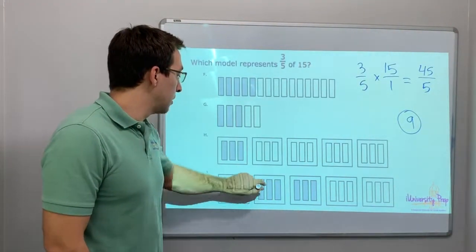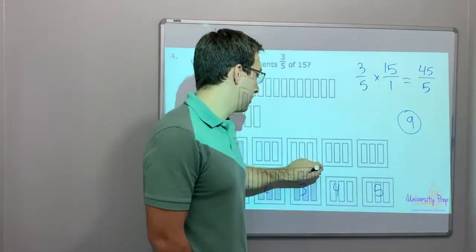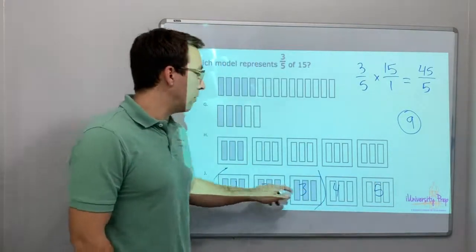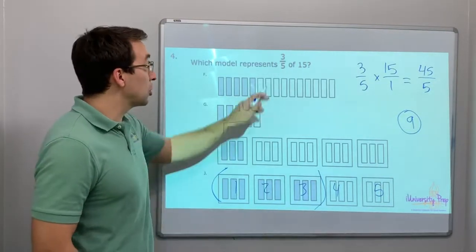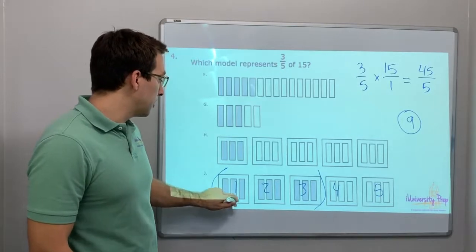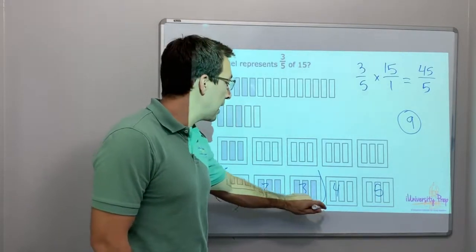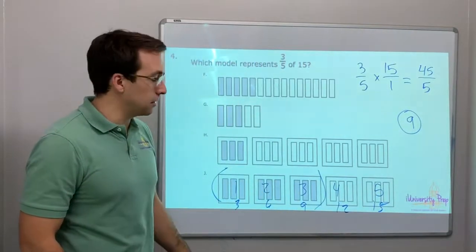One, two, three, four, five. Three out of five. What's three-fifths of fifteen? How many are there total? Look. Three, six, nine, twelve, fifteen. Does that make sense?